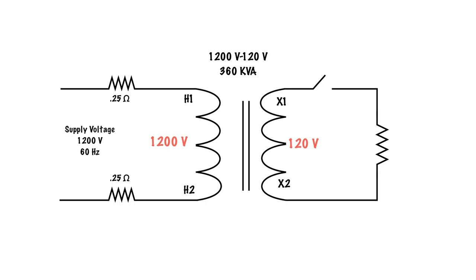So at this point, we do that and we end up with a current of 3000 amps. So we have 3000 amps flowing in the secondary at this point.